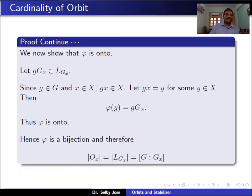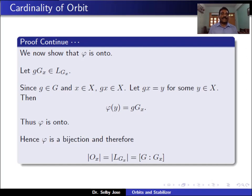We now show φ is surjective. Take some left coset g*G_x in L(G_x). Since g belongs to G and it acts on X, g*x belongs to X. Therefore g*x is in O(x) — call it y. Then φ(y) equals g*G_x. Thus φ is onto. Hence φ is a bijection, and therefore the number of elements in O(x) equals the index of G_x in G.